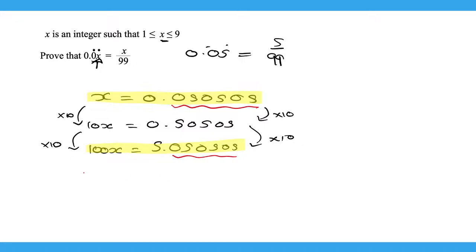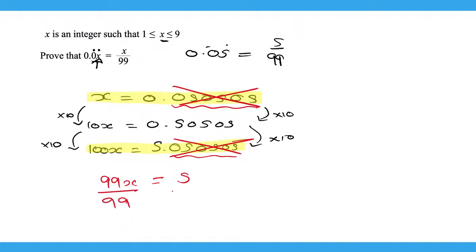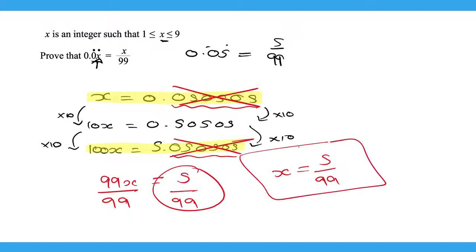So 100x subtract x gives 99x, and the decimal parts cancel, leaving 5 subtract 0 = 5. Dividing both sides by 99 gives x = 5/99. So 0.0̄5̄ equals 5/99, and we have proved that for any integer x between 1 and 9, 0.0x̄ equals x/99.